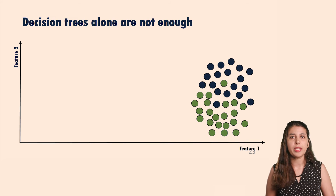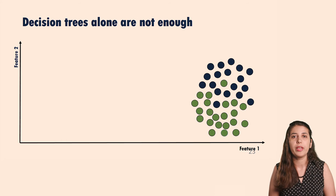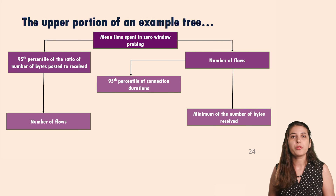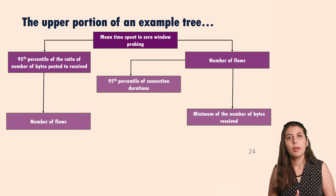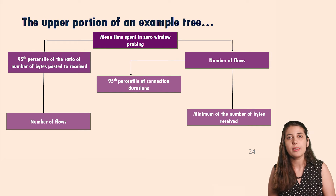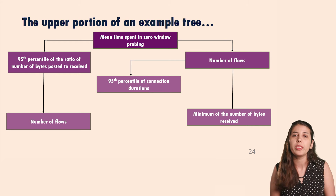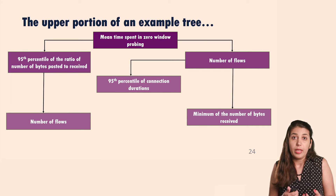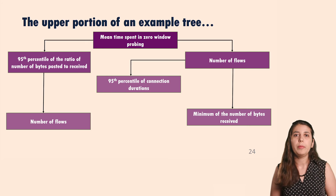Finally, we also remove server-side failures. What we have left is client-side failures versus normal data — data with no failures. The topmost feature in the example tree here is metrics related to time spent in zero-window probing. Zero-window probing happens when the server can't read from the receive socket fast enough, the receiver runs out of buffer, and the client goes into zero-window probing mode. But when the client is busy — say under high CPU load — the client posts less data onto the socket, so the server can keep up, and we spend less time in zero-window probing. That's why it's a prominent feature.